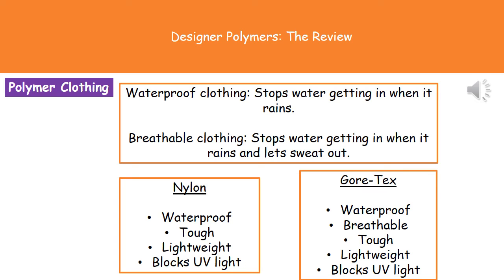Comparing two polymers: on the left we have nylon, which is waterproof, tough, lightweight, and blocks UV light. On the right we have Gore-Tex, which is waterproof, breathable, tough, lightweight, and blocks UV light. If you're thinking about the best outdoor clothing, Gore-Tex would be the choice because, in addition to the properties they both share, it is also breathable — meaning you won't get that unpleasant sweaty feeling when wearing it outside during exercise.